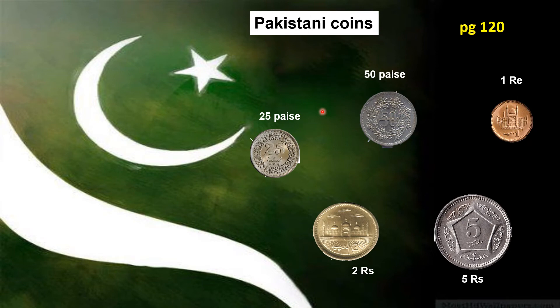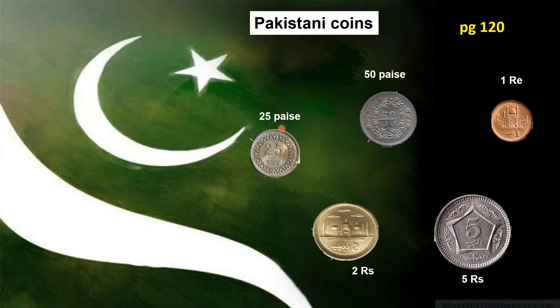Students, now open book page number 120. Here I am going to show you some coins of Pakistan. Coins are made from metal — they are hard in shape. This is a coin of 25 paise. We write the spelling of paise as P-A-I-S-E. In short form, we write only the letter P.